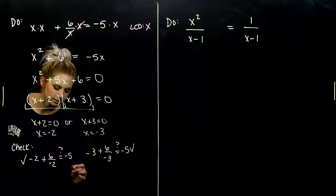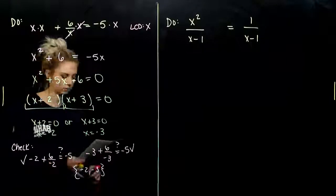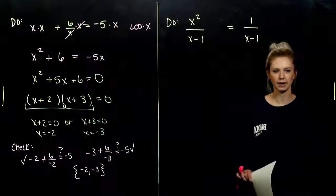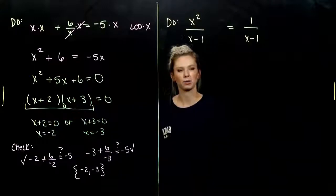So, our solution set in this case contains both values, negative two and negative three. So, we need to get in the habit of checking our answers when we're dealing with a quadratic, higher power than just one.